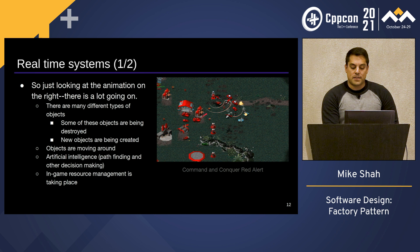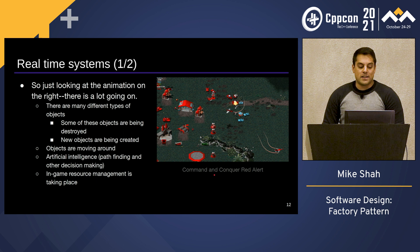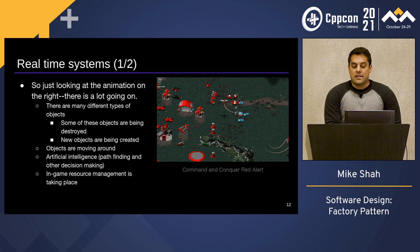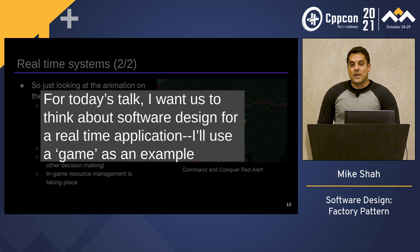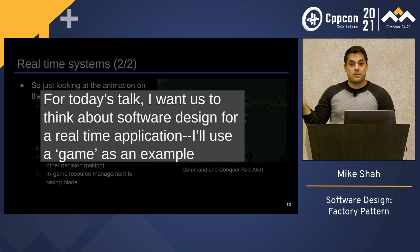To illustrate this point, I've got a screenshot of Command & Conquer, a video game from the 90s. There's a lot going on: vehicles moving around, objects being created and destroyed, artificial intelligence. There's a lot of stuff going on in games that makes them relatively interesting when it comes to the challenge for software architecture. Today I want us to think about software design specifically for a real-time application. The pattern we're going to be talking about is applicable in many domains, but I'm going to think about it in a video game context.